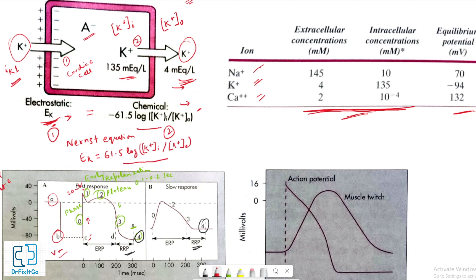This equilibrium is expressed by the Nernst equation. The right-hand term represents the chemical potential difference and the left-hand term represents the electrostatic potential difference that would exist across the cell membrane if potassium were the only diffusible ion. This electrostatic difference is called the potassium equilibrium potential. When the concentrations of potassium inside and outside the cell for mammalian myocardial cells are substituted into the Nernst equation, the calculated electrostatic potential difference equals about minus 95 millivolts.